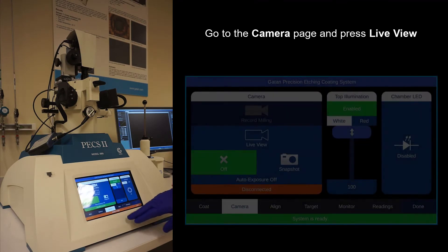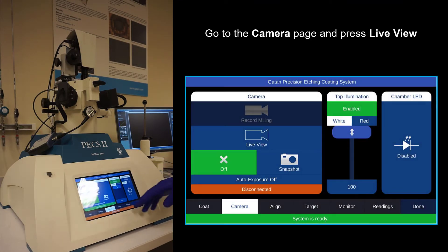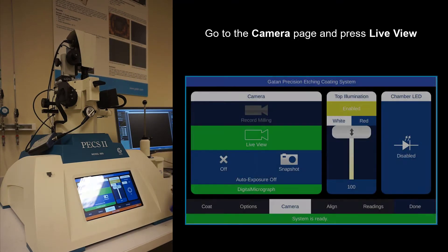Now go to the camera page. We won't actually be using the camera, but we would like to open the shutter so we can see inside the chamber. Select live view.